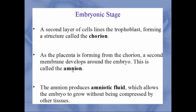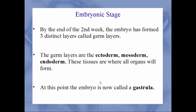The amnion is the fluid and membrane that ruptures when a woman's water breaks. A baby will sit in the amniotic sac filled with amniotic fluid, and when it's time for labor to begin, this amniotic sac will rupture and the fluid that comes out is the amniotic fluid — at that point you can't stop labor. By the end of the second week, an embryo has formed three very distinct tissue layers called germ layers: the ectoderm (outermost), mesoderm (middle), and endoderm (innermost). These tissues are where all of our organs will be developed.